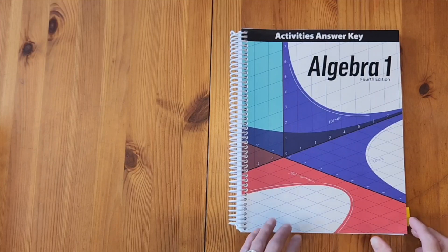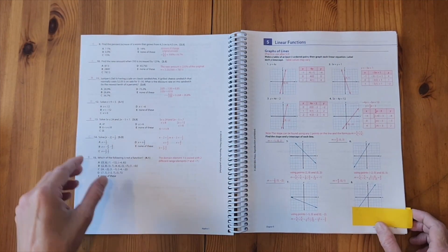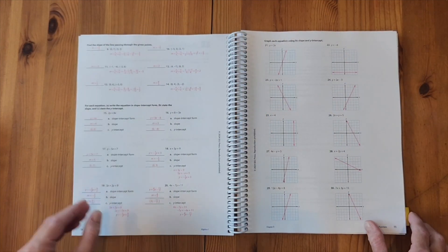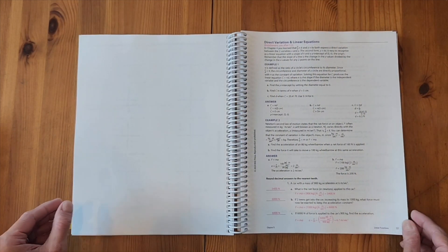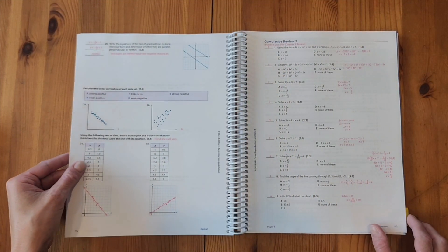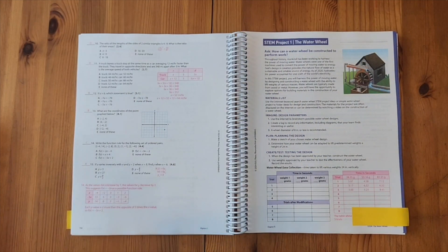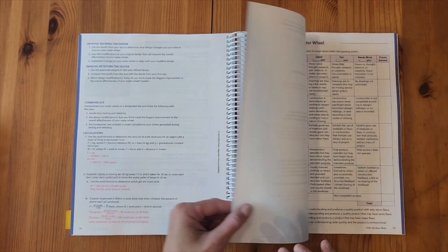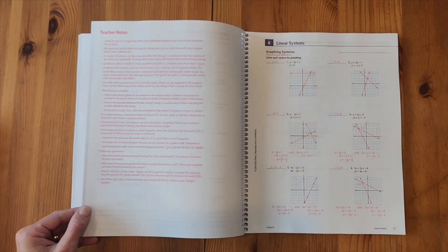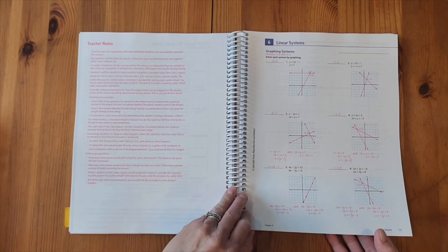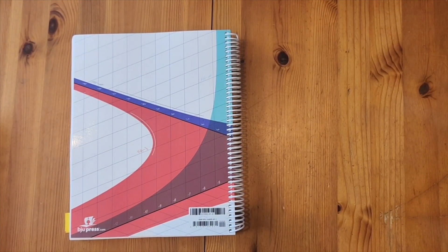This is the activities answer key. So this is where you're going for those solutions to the activities student workbook. It does have the solutions worked out for you. It also gives you some suggestions of sample answers you might see for the STEM project. And then it gives you some information you might want to read through on the back of the rubric of things you might be looking for during the STEM project and some additional follow-up questions. So this is the student activities answer key.